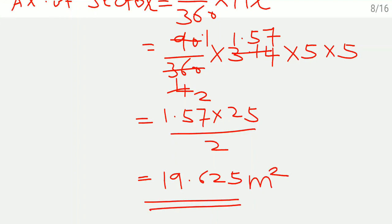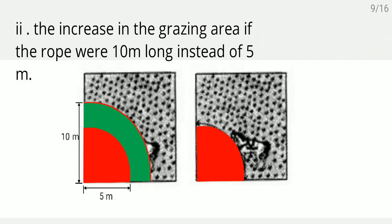The second part asks for the increase in grazing area if the rope were 10 meter long instead of 5 meter. When the rope was 5 meter this was the smaller area; now with 10 meter rope a bigger sector is formed. The increase in area is the bigger sector minus the smaller sector.